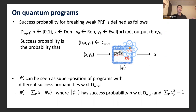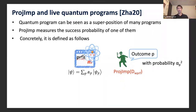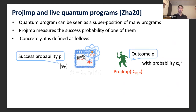Given this background, I will introduce projective implementation and the notion of live quantum programs. A quantum program can be seen as a superposition of many programs with different success probabilities. A projective implementation is a measurement process that measures the success probability of one of those programs in the superposition. Concretely, if we apply projective implementation for D_wprf to ψ = Σ_p α_p |ψ_p⟩, we obtain outcome p with probability |α_p|², and the program state collapses to ψ_p — a quantum program with success probability p.